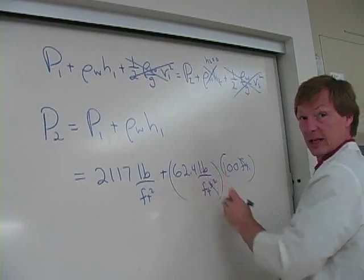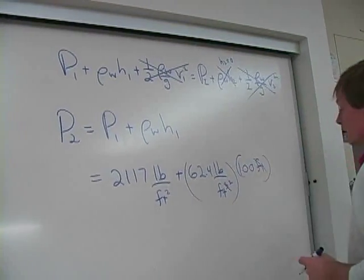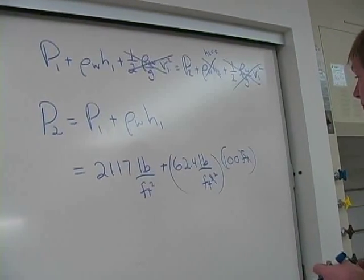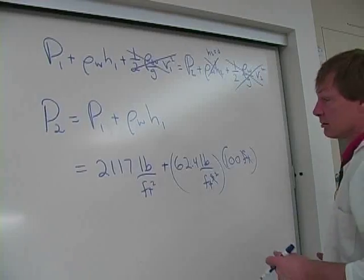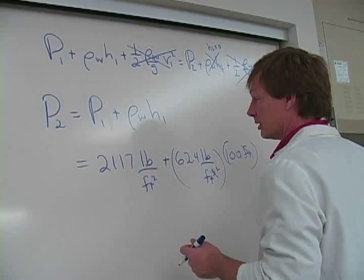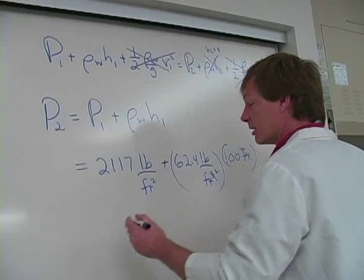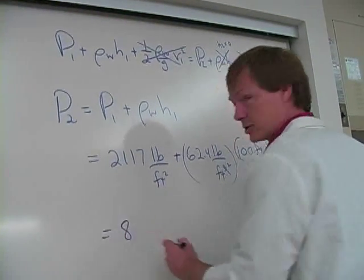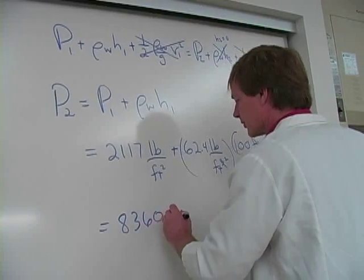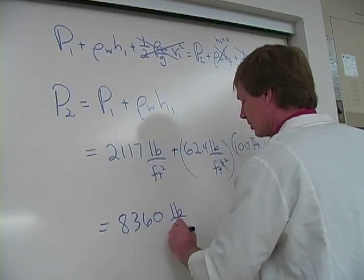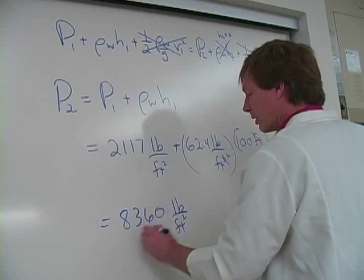Plus 62.4 pounds per cubic foot times 100 feet of height. One of the feet cancel. I got pounds per square foot now. So this is 6,240, 8,357, about 8,360. Check my math. About 8,360 pounds per square foot.